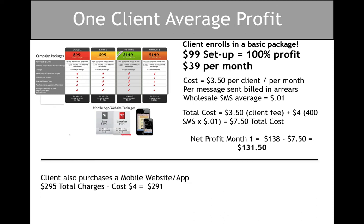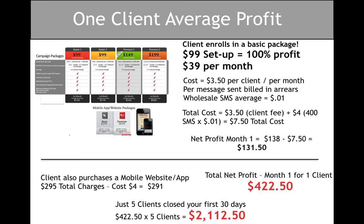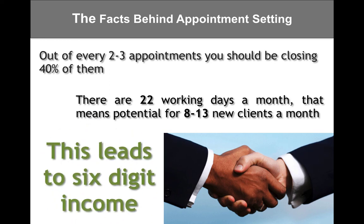Now let's say the client also buys a mobile website package and an app. You charge them an extra $295 setup fee and $19 a month. Your cost on that is just $4 a month, so your net profit on that client is $422 the first month. Let's say you just close five of those in your first 30 days — that's $2,100 of net profit after all costs. With 22 working days in a month, setting two or three appointments per day and closing 40%, you're closing 8 to 13 new clients per month, which can lead to a six-digit income very, very quickly.